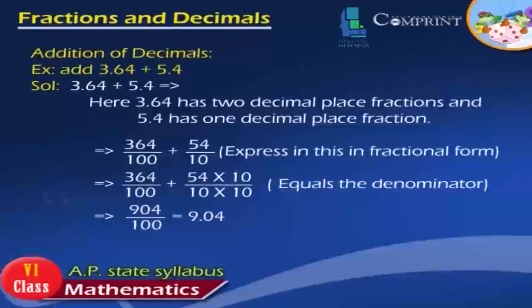Addition of Decimals. Example: add 3.64 plus 5.4. Here, 3.64 has 2 decimal place fractions and 5.4 has 1 decimal place fraction.